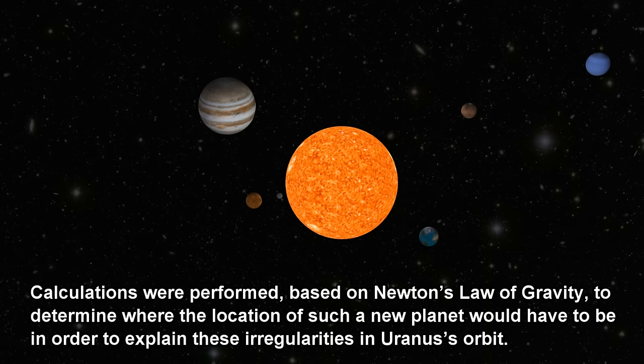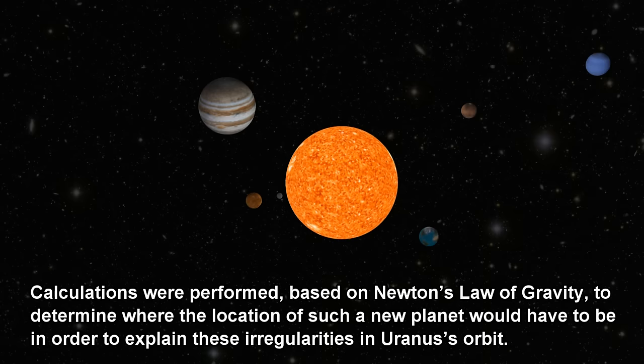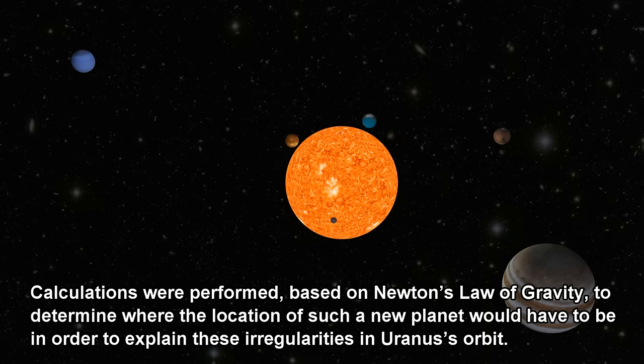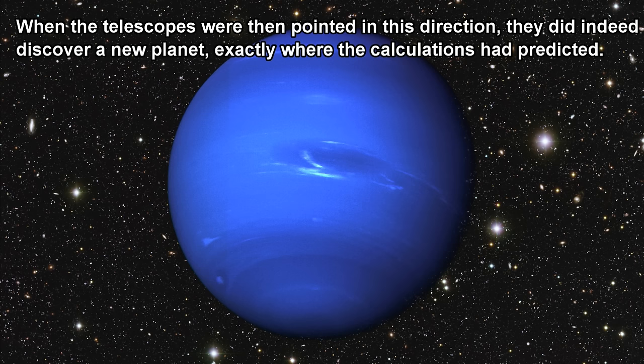Calculations were performed, based on Newton's law of gravity, to determine where the location of such a new planet would have to be in order to explain these irregularities in Uranus's orbit. When the telescopes were then pointed in this direction, they did indeed discover a new planet, exactly where the calculations had predicted.